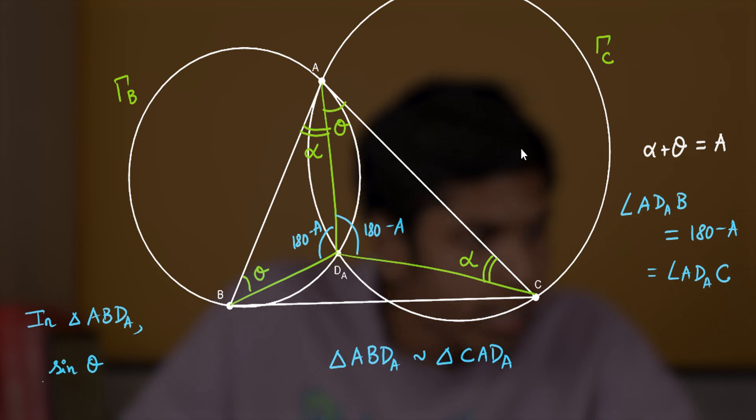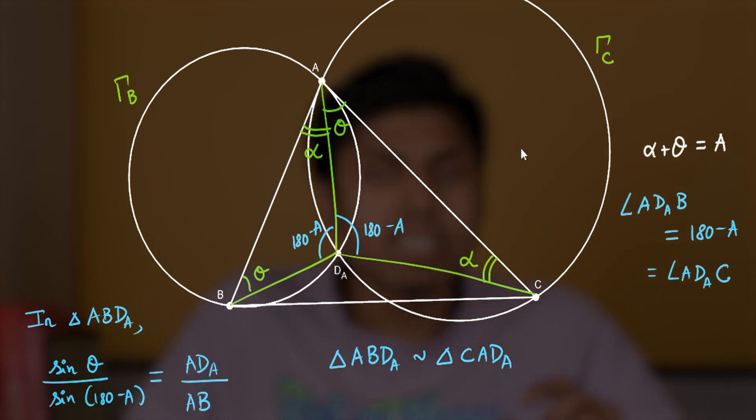All right, coming to the sine ratios. Notice in triangle ABD_A, if you apply the sine rule: sine theta by sine of 180 minus A equals AD_A by AB. This is called the sine rule of a triangle, that is the sine ratios of two angles equal the ratio of their corresponding opposite sides.